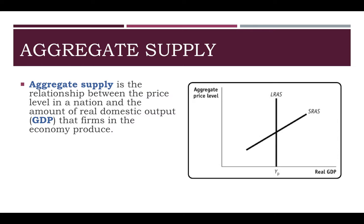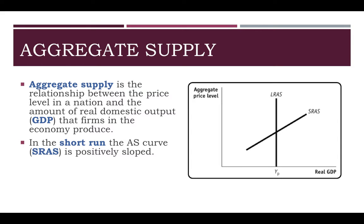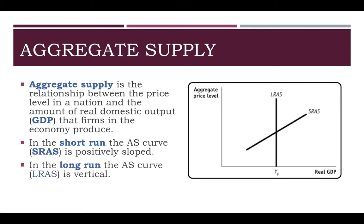We actually have two supply curves. We have the short-run aggregate supply curve, which is sloped upward, just like our supply curve we talked about in microeconomics, and we have the long-run aggregate supply curve, which is vertical. We'll talk more about both of these and the reasons why as we go through this and in the next few days.